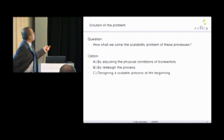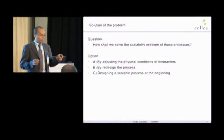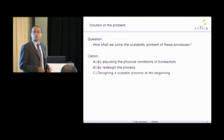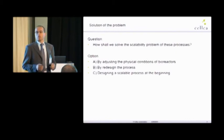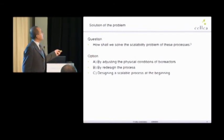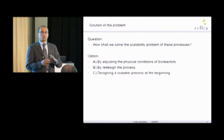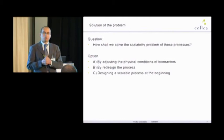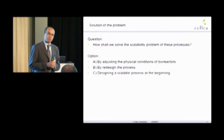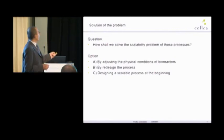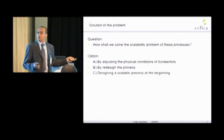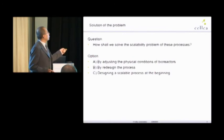Now, to the solution of the problem, I have prepared the question that is more or less a repeat of the statement. How shall we solve the scalability problem of those not scalable processes? One option, by adjusting the physical conditions of the bioreactor. That means steer a bit slower or higher, sparge more oxygen or more gas or whatever, nitrogen, whatever. By redesigning the process—that means when we believe the physical conditions are already optimal, and when I believe that my process is fragile, then I should re-engineer the process. And third, designing a scalable process at the beginning. Of course, that is the best solution in order to not lose time and money.